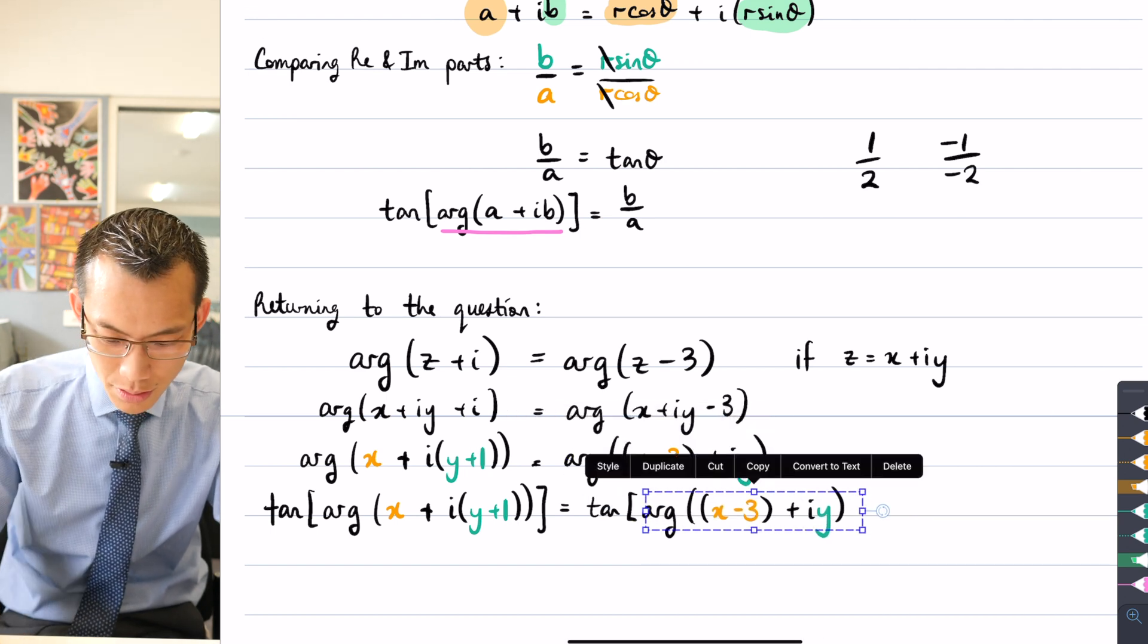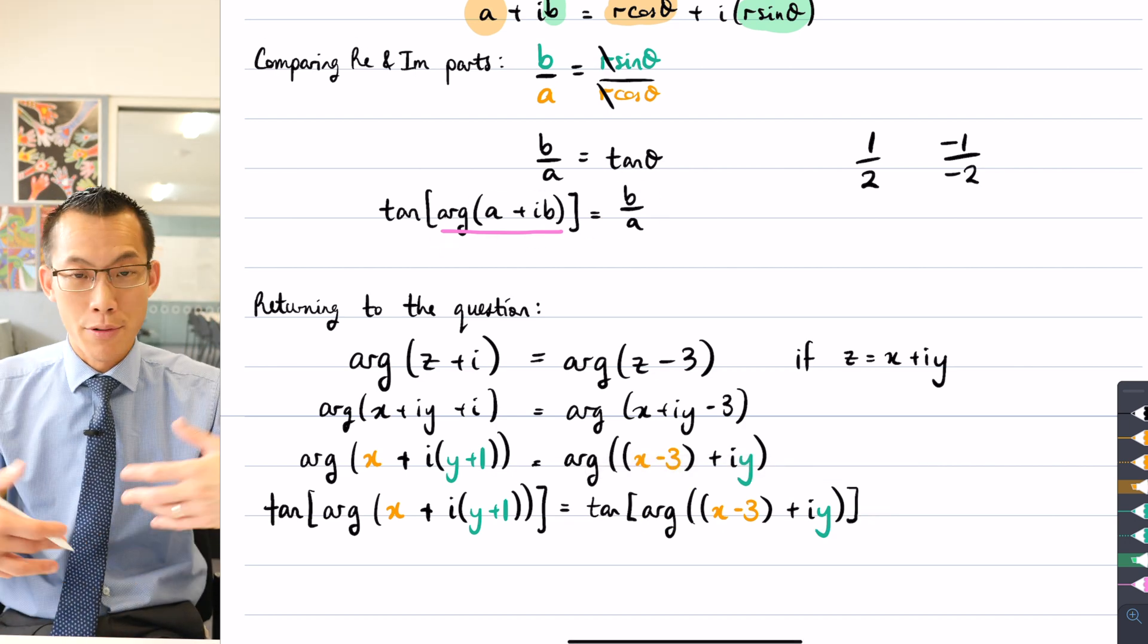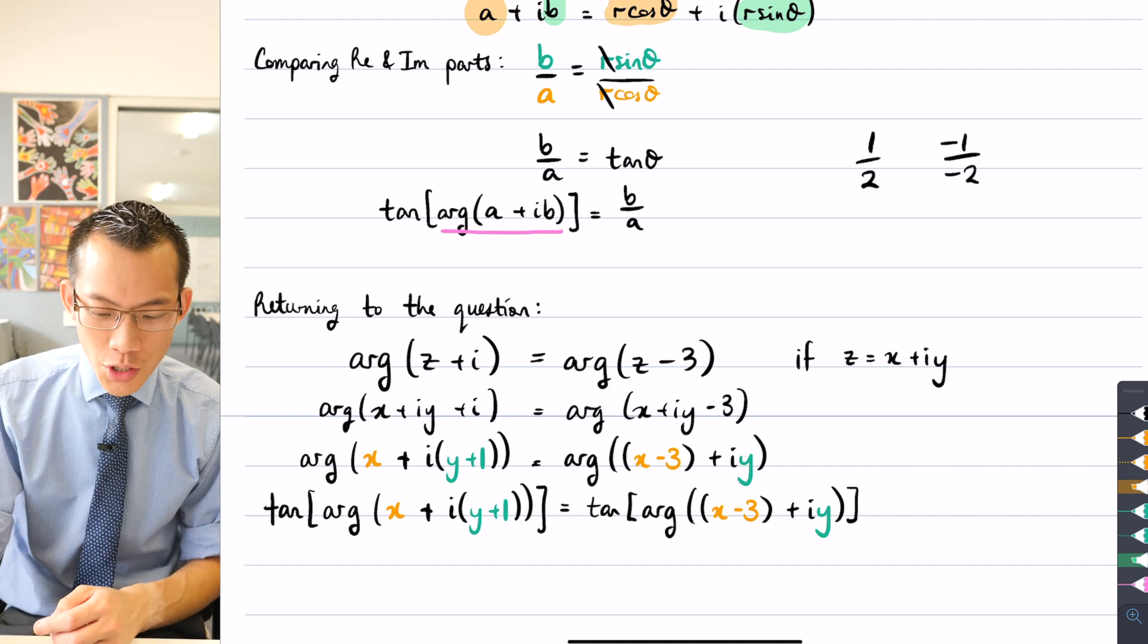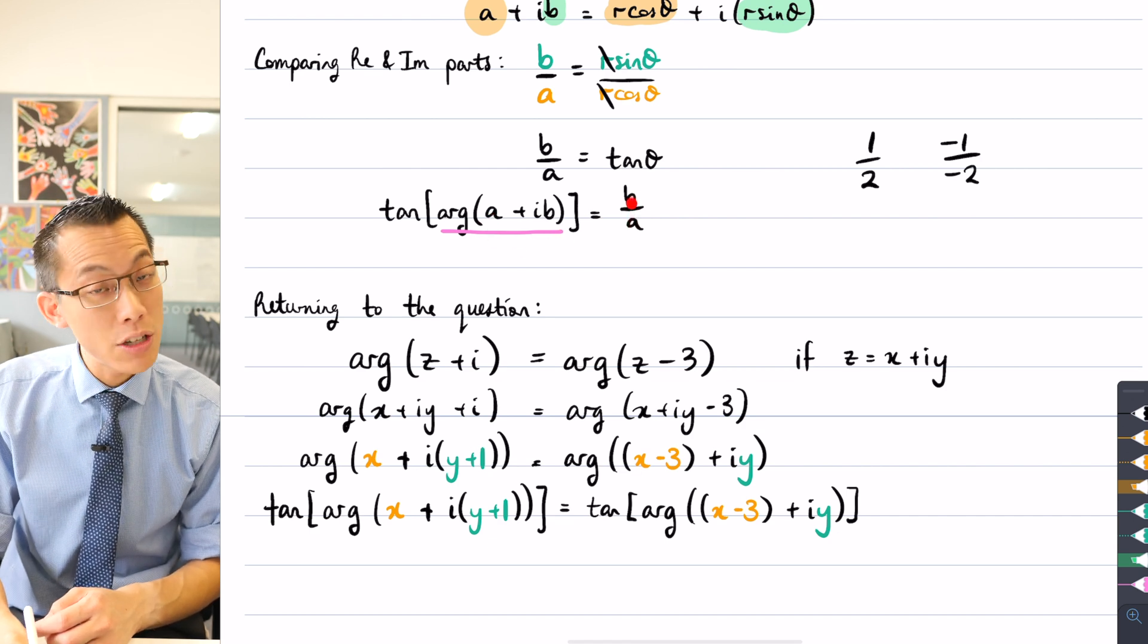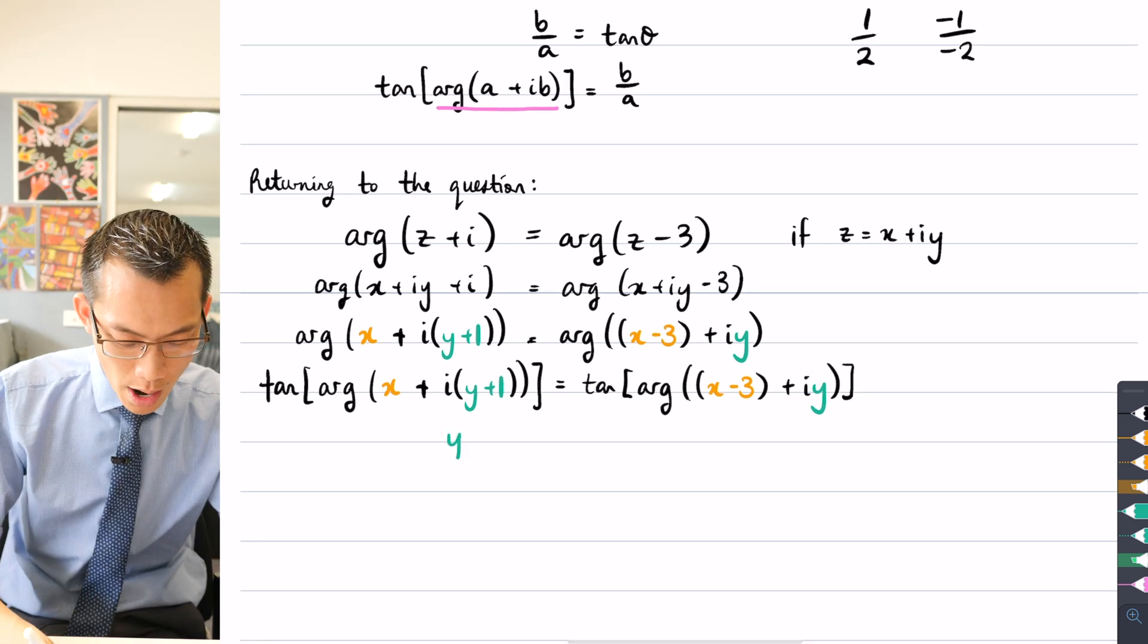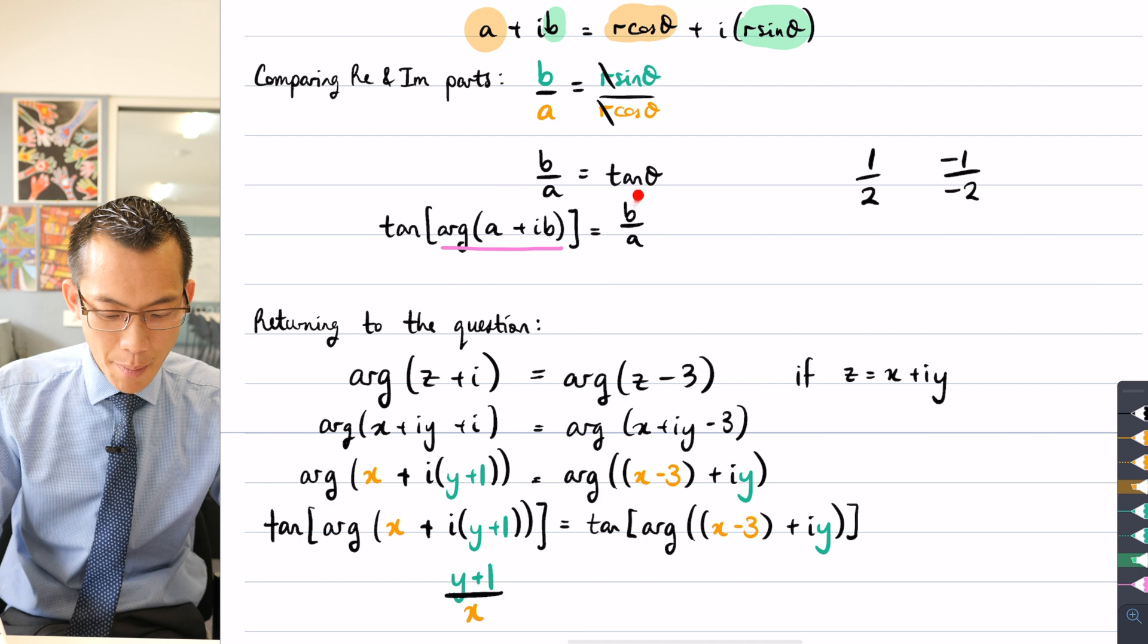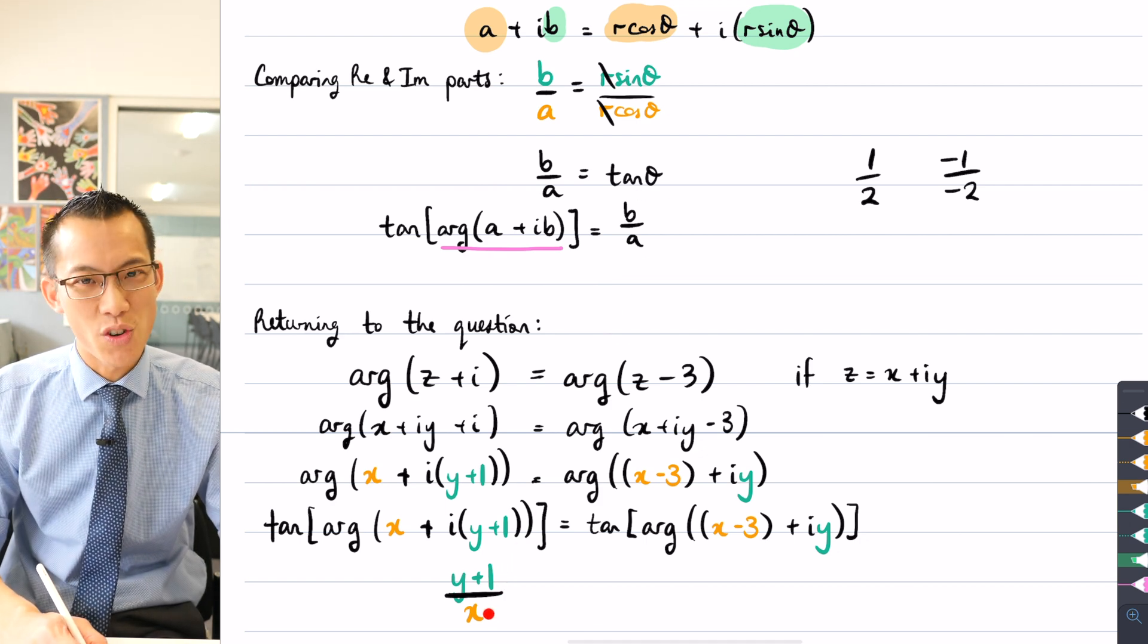I'm going to use this result that we saw up here to then get rid of all of the tans and the arguments. I'm just going to get x's and y's and some other constants because that's what I'm after, a Cartesian equation. So all I need to do is say, what's the imaginary part? What's the real part? And then I just take the quotient. On the left-hand side, the imaginary component is y plus 1, and then I divide that by my real component, which is just x. So this you can see, this is b over a, it's just that this is my particular value of b, this is my particular value of a. So far, so good.